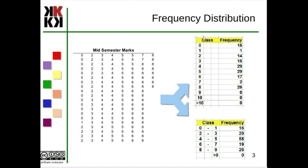This is an ungrouped frequency distribution. We do the same here — the distribution, but the data is summarized.